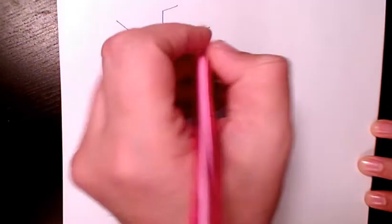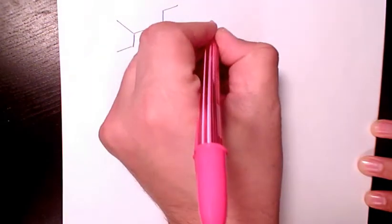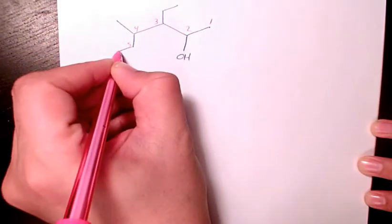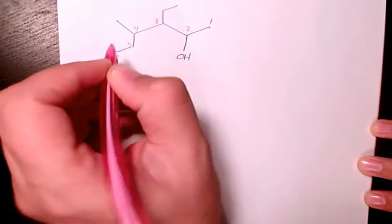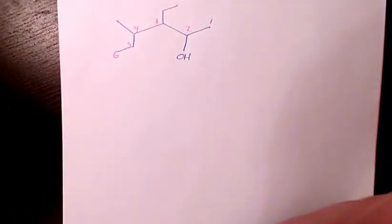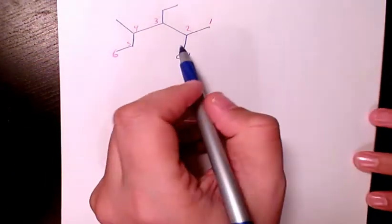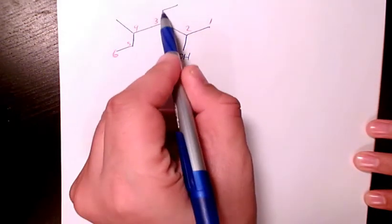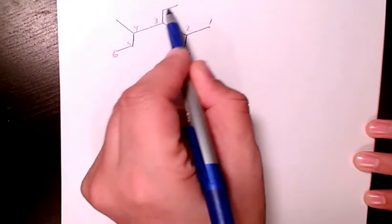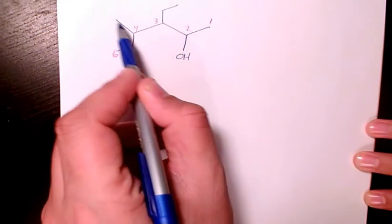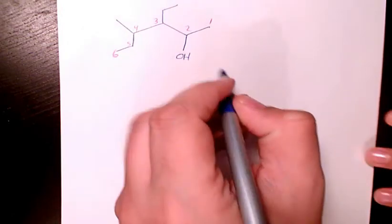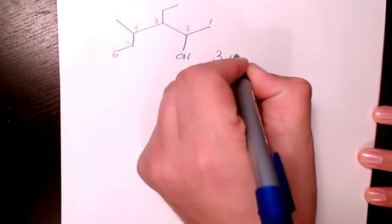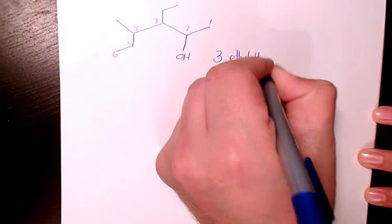So one, two, three, four, five, six. So if we have 3-ethyl and 4-methyl, we have 3-ethyl, 4-methyl.